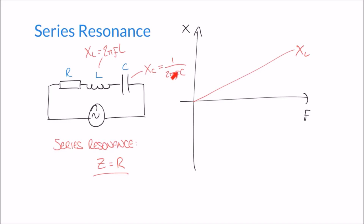Now let's look at the reactance of the capacitor: XC equals 1 over 2π f C. Since f is in the denominator, as f gets bigger — assuming all other values are constant — our reactance gets smaller; we're dividing by a bigger number. We also need to remember that XC is negative, or downwards on our imaginary plane. XL has a positive j value and XC has a negative direction on that Cartesian plane.